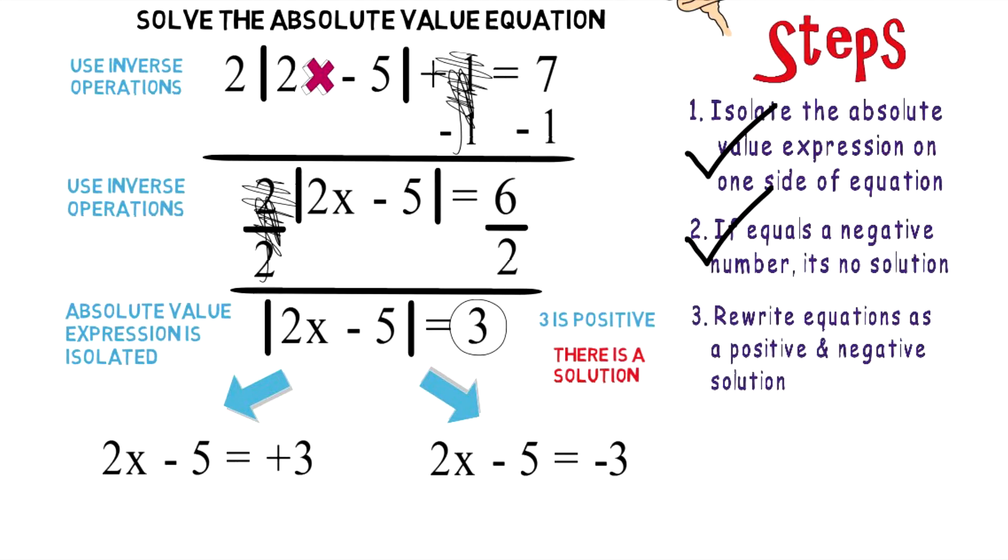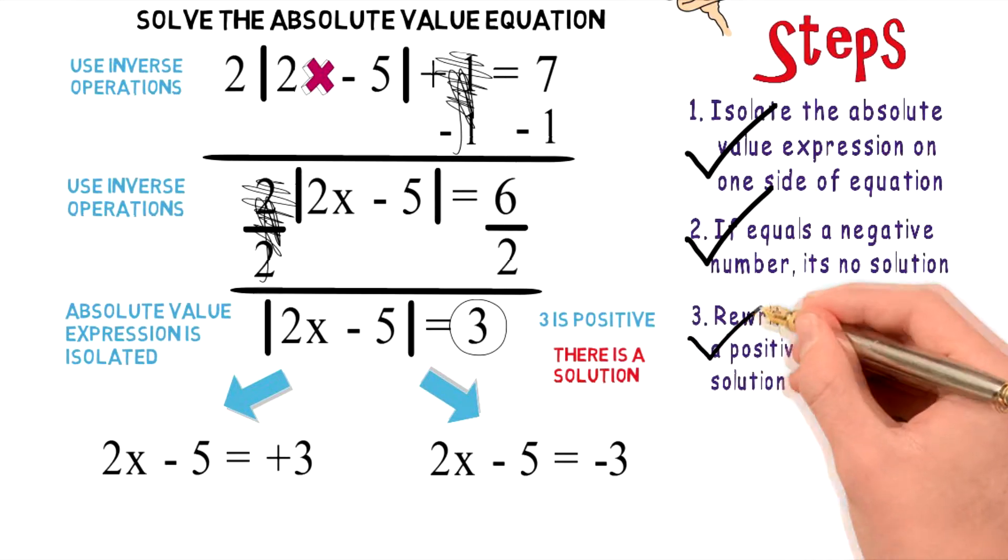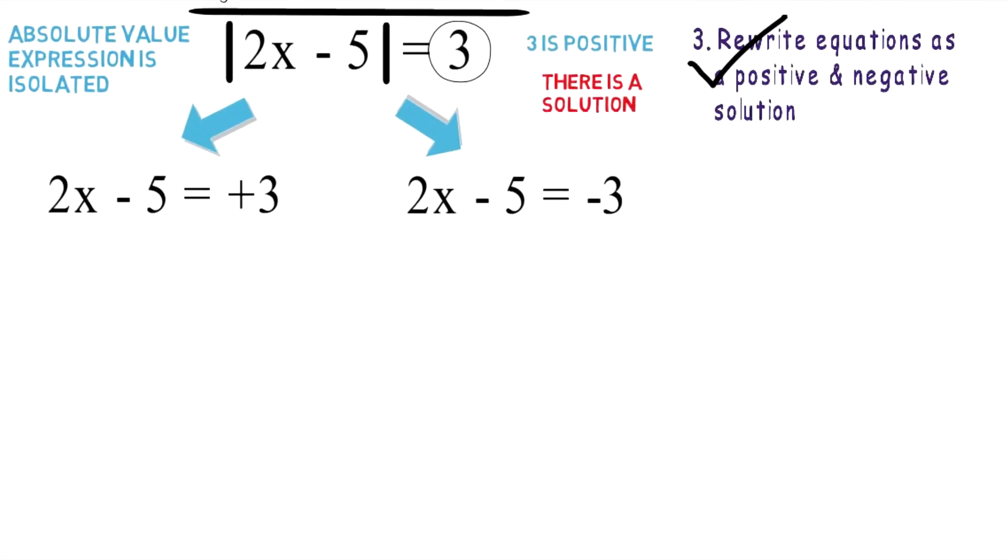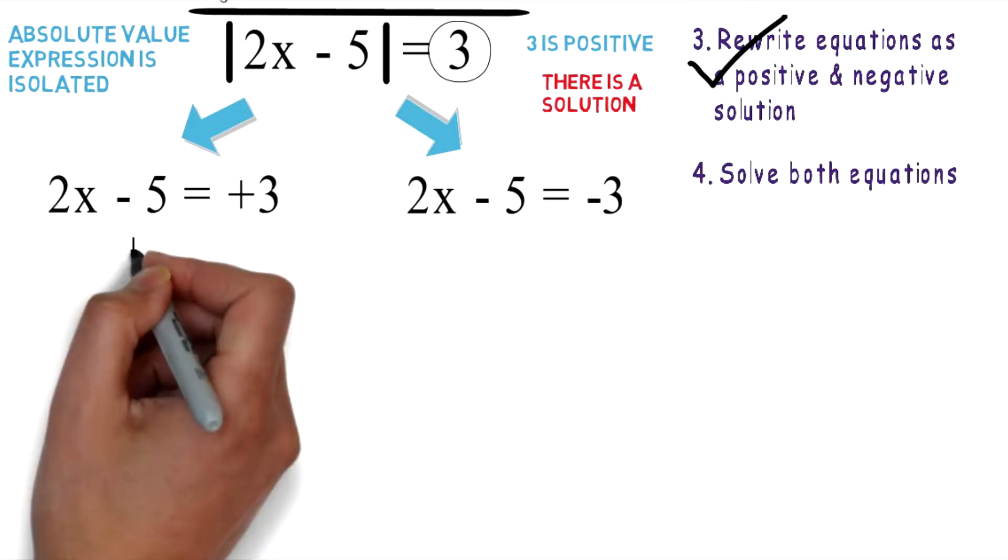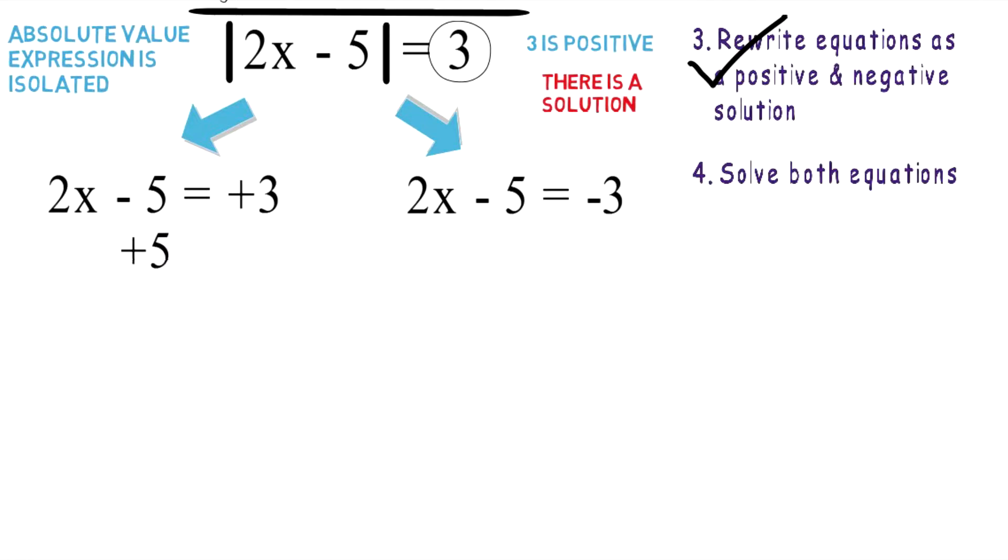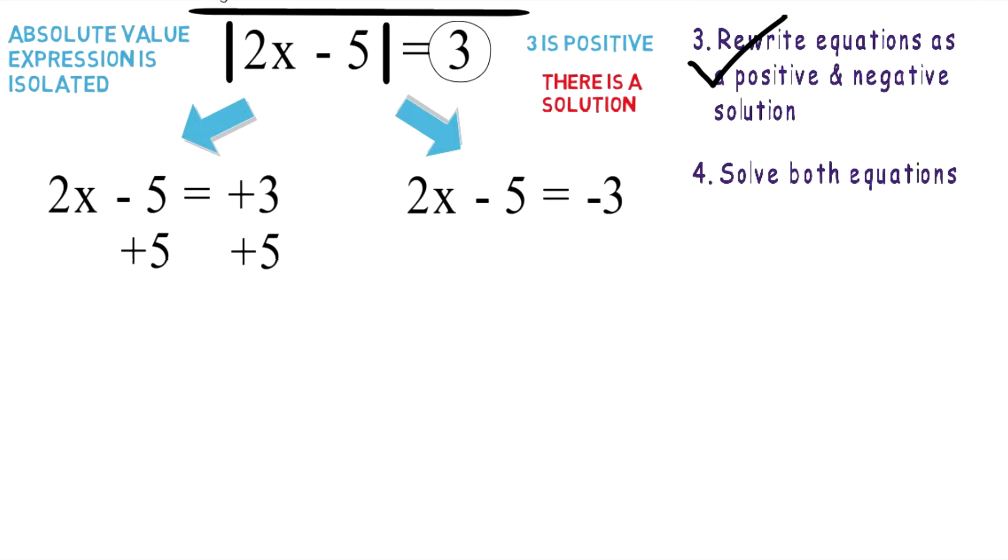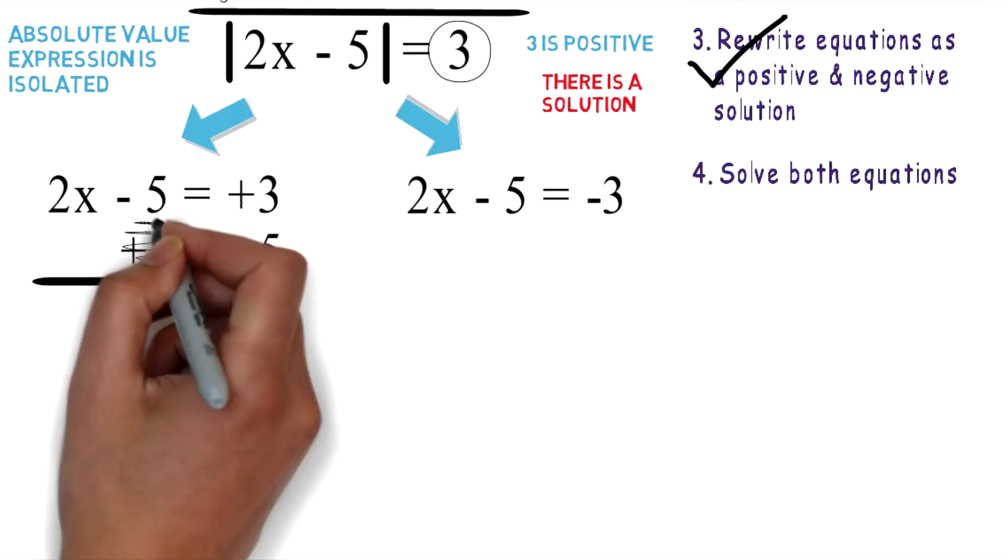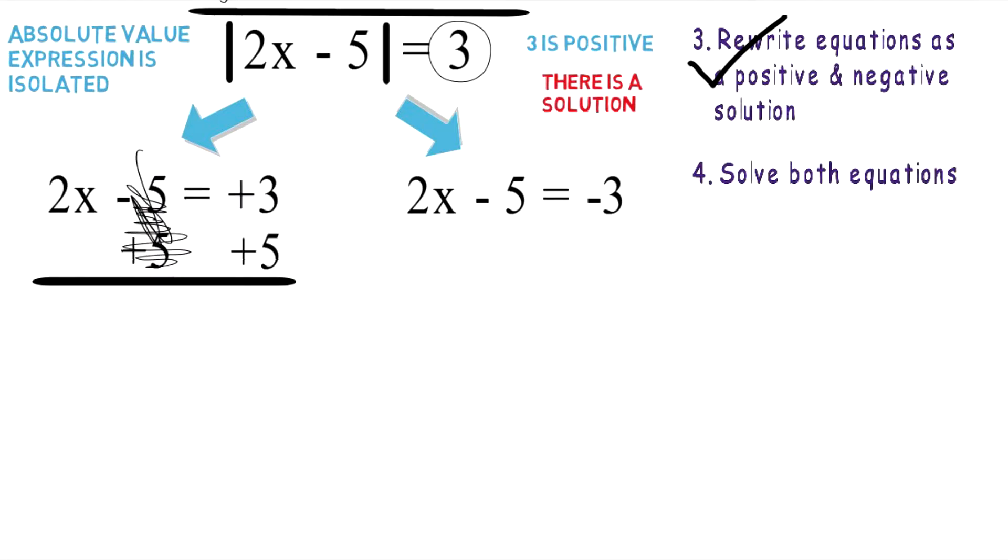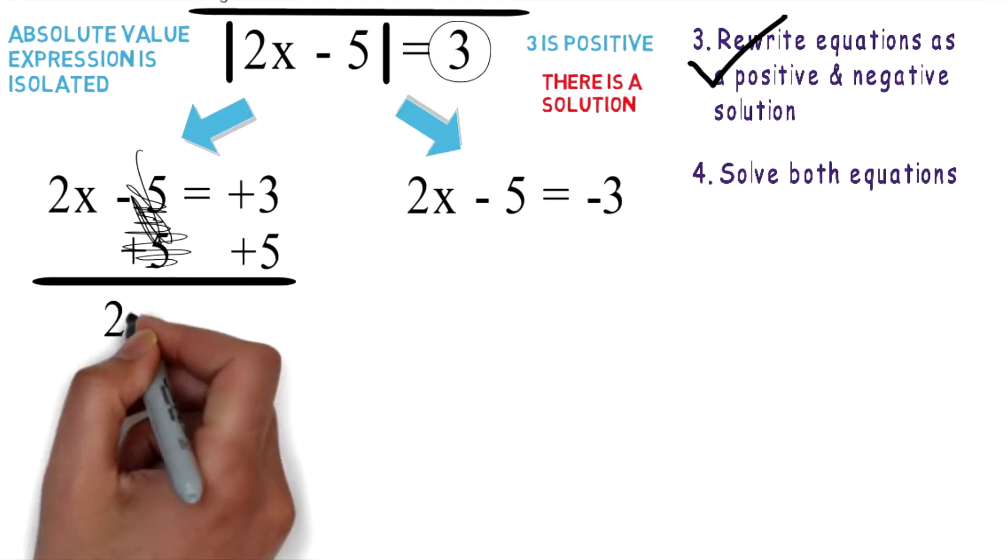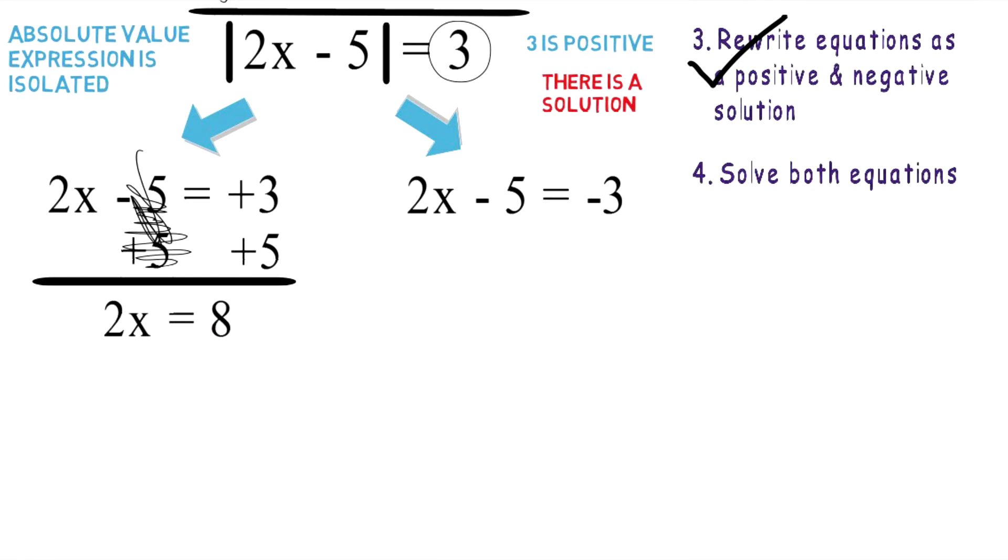We can then check off step number three and move on to step number four, which is solve both equations. So let's do that. We're going to use inverse operations. So let's add five to both sides of the equation. Positive five and negative five will cancel out, and you're left with 2x = 8.